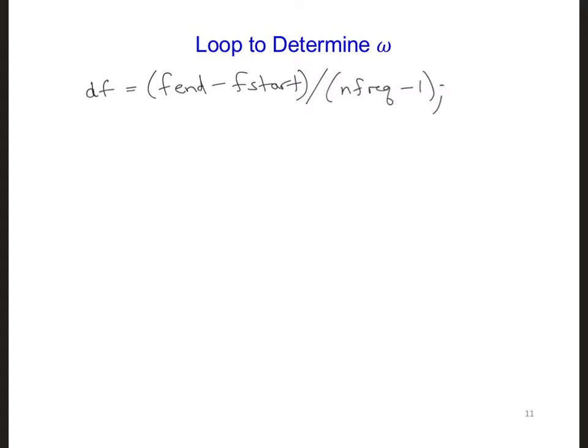Having a minus 1 in the denominator ensures that the spectrum will be plotted all the way up to f end, since the first frequency at which we calculate the DFT is f start.